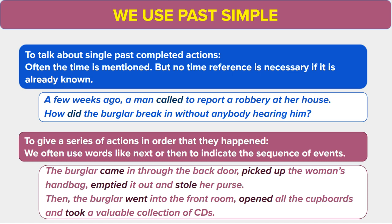We use the past simple to give a series of actions in order that they happened. We often use words like 'next' and 'then' to indicate the sequence of events. Please listen to these examples. The burglar came in through the back door, picked up the woman's handbag, emptied it out, and stole her purse. Then, the burglar went into the front room, opened all the cupboards and took a valuable collection of CDs.